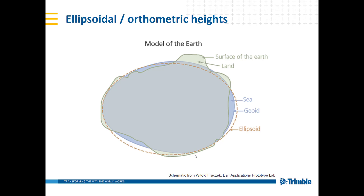Then there's a more detailed model, which is the geoid, shown here as the blue filled part. We try to come a little closer to reality — it's not an ellipsoid, it has a bit more detail. And then we have our real terrain, our surface of the earth.